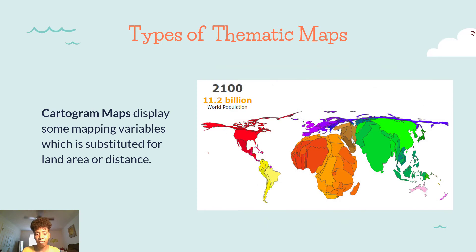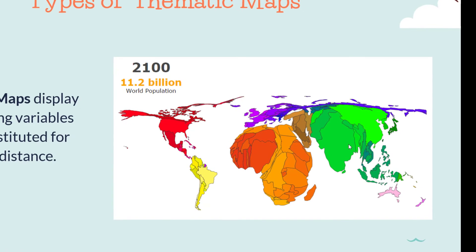Cartogram maps display some mapping variable that is substituted for land area or distance. In this case, this map is looking at population in 2100. We're in 2020, and they're thinking the population would be 11.2 billion people by that time. This map is doing a projection — actually predicting what the population would be — using visual information to show that places like India and certain places in Africa, probably Nigeria, would have a bigger population than places like the United States, Chile, or Argentina.